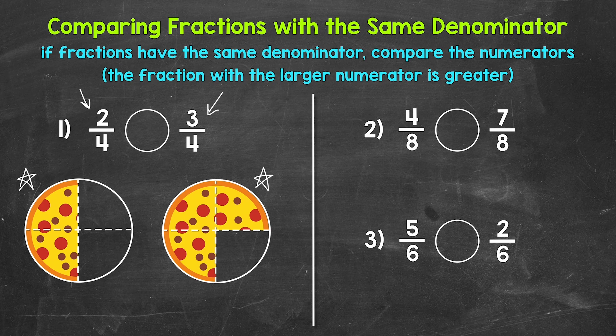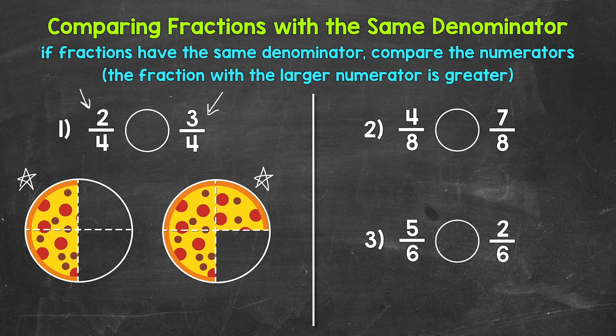Since both pizzas were divided into the same amount of equal pieces — four — all we had to do was look at the numerators to see which pizza had more left. When we have the same denominator, we have wholes that are divided into the same number of equal pieces, so all we have to do when comparing is see which fraction has more of the pieces, meaning which has a larger numerator. So three-fourths is greater. Our comparison symbol always opens up towards whatever is greater, and we can read this comparison from left to right as two-fourths is less than three-fourths.